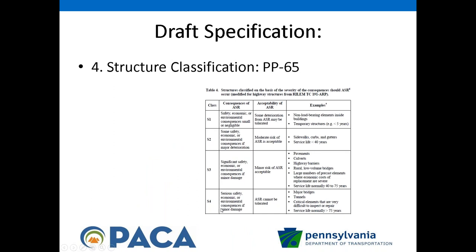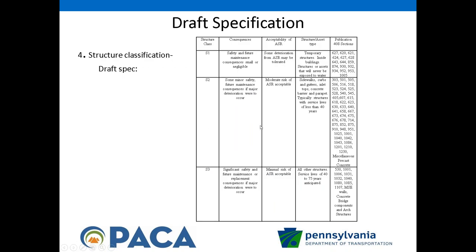For the structure classification, rather than leaving interpretation open — for example, PP65 describes S2 as having minor safety and future maintenance consequences — we went ahead and listed the 408 publication sections related to each of the three structure classes. So it will be very clear: if you're paving under spec 501 or 506, then you are under a structure classification of S2.